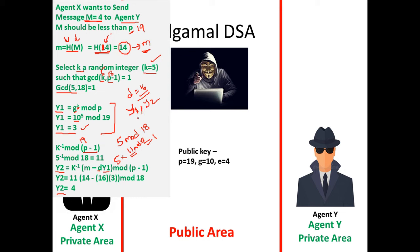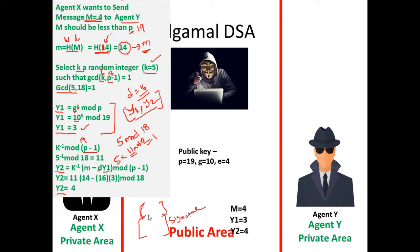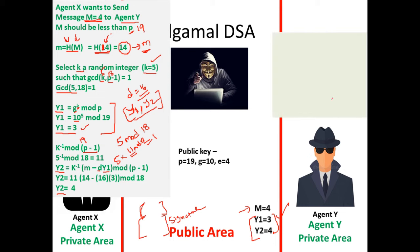Y1 and Y2 together form the digital signature for agent X. Agent X tags the plain text message M with this signature and sends both to agent Y. Agent Y's task is to verify the signature — to validate it and confirm the message has not been altered and is from an authenticated source. We'll see how agent Y performs this verification.